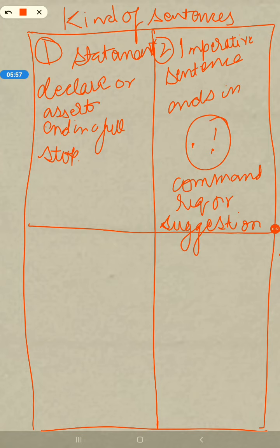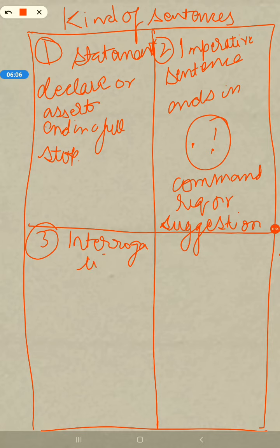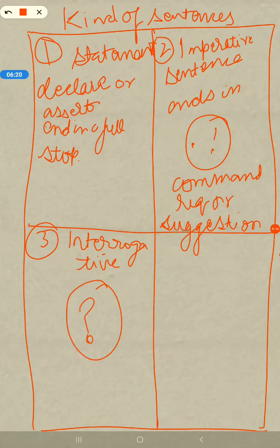Third: interrogative sentences - these are questions and end with a question mark. This is the only thing you have to check. If it is a question, it is an interrogative sentence, and if you have an interrogative sentence, then you will have a question mark.